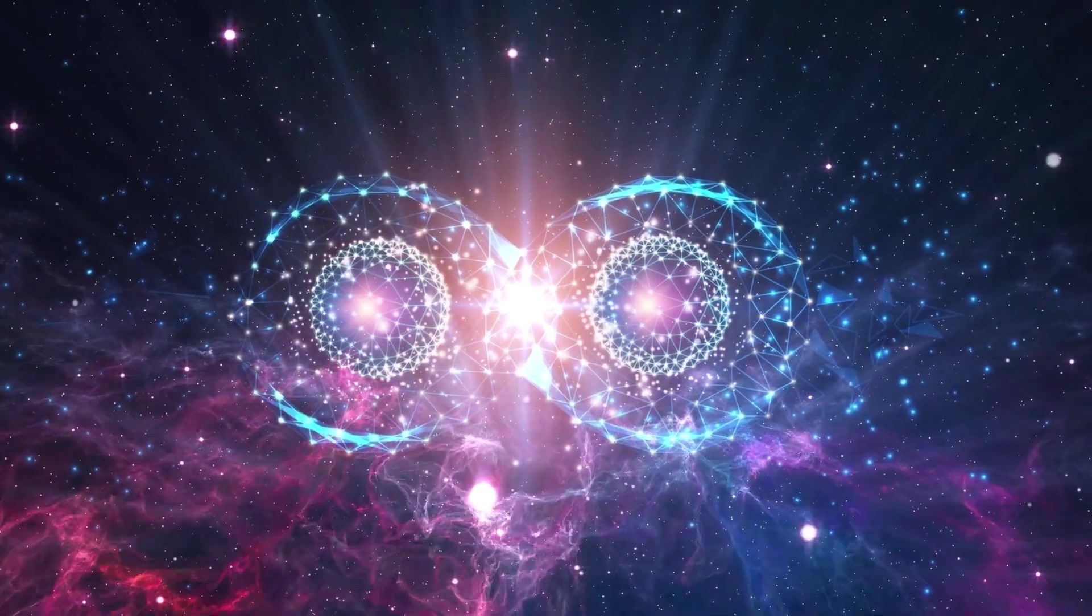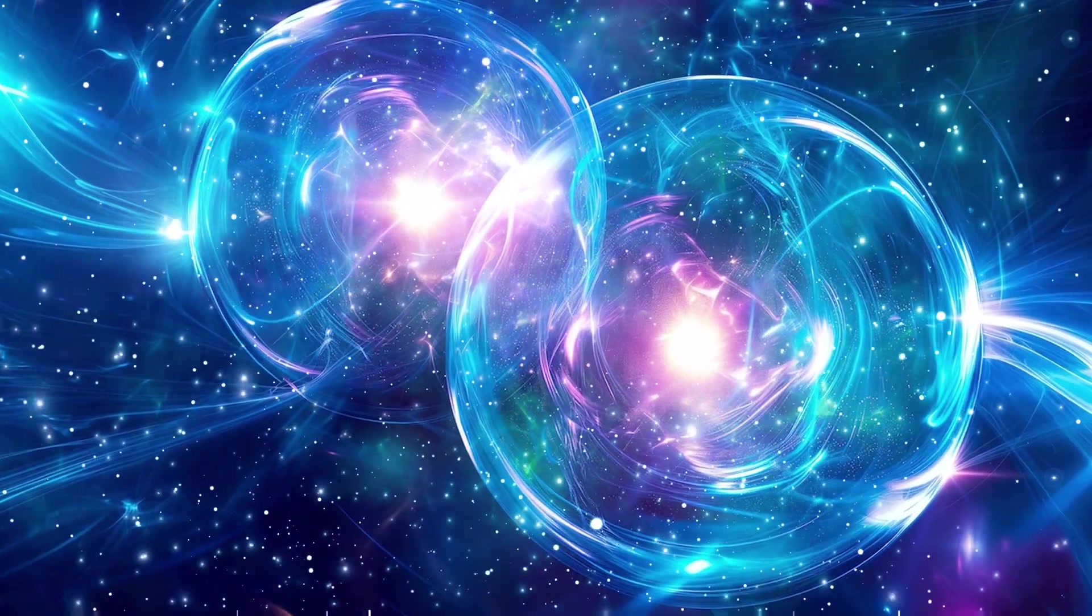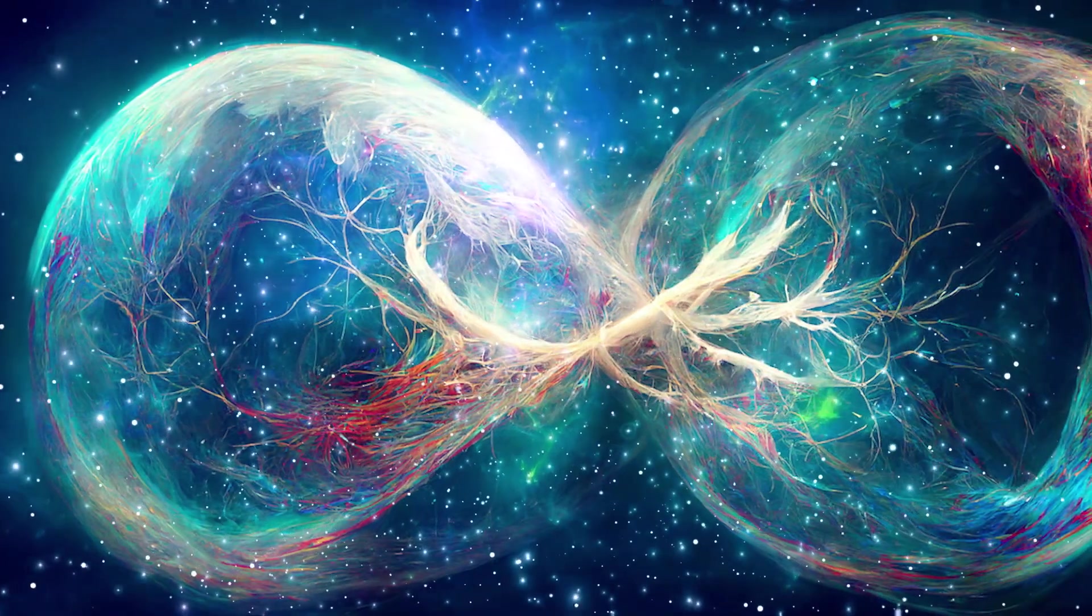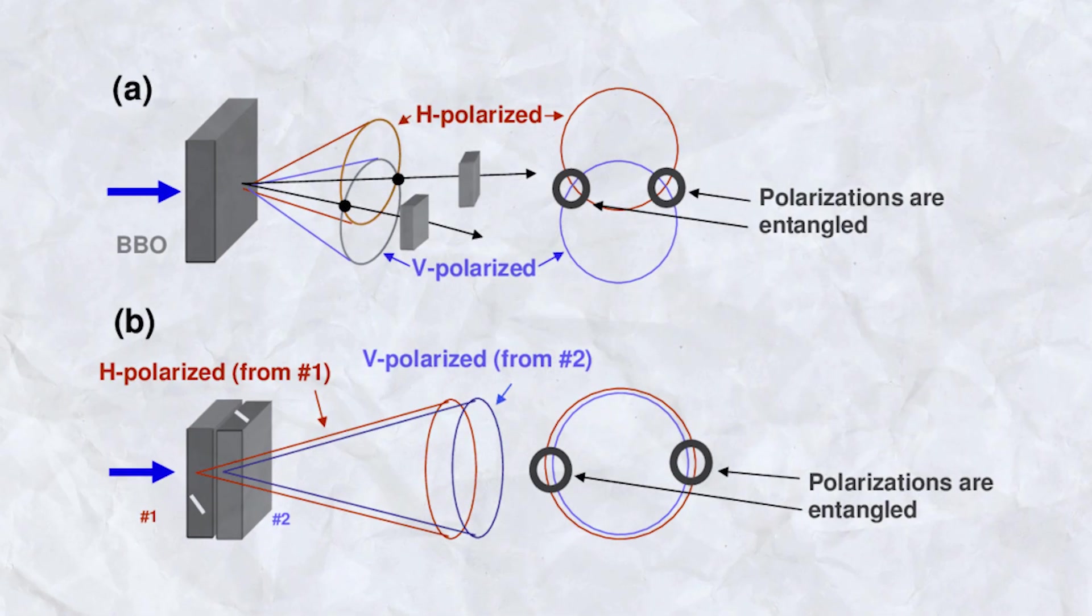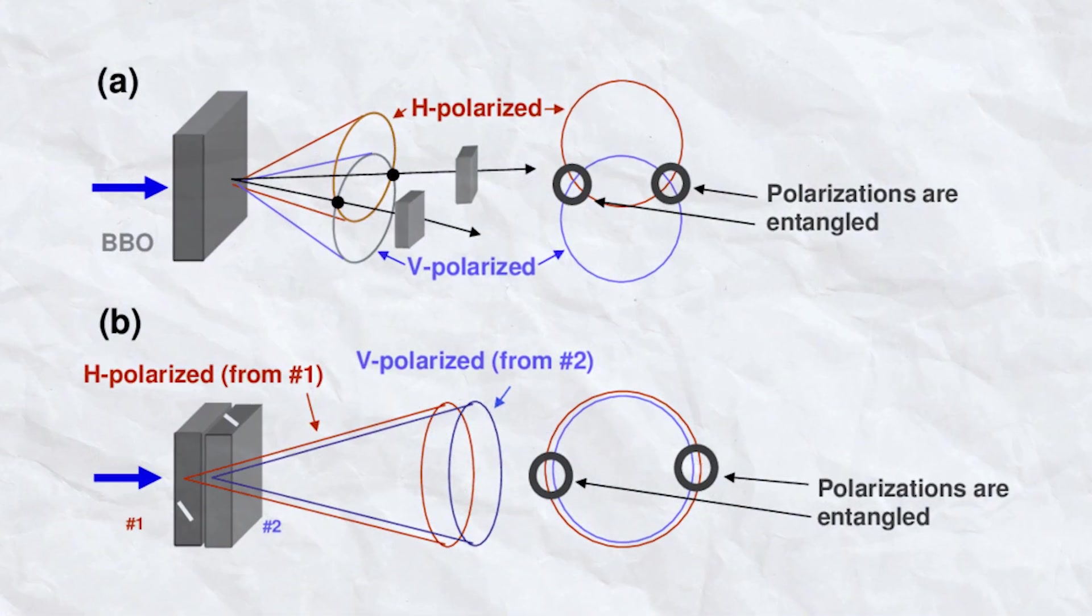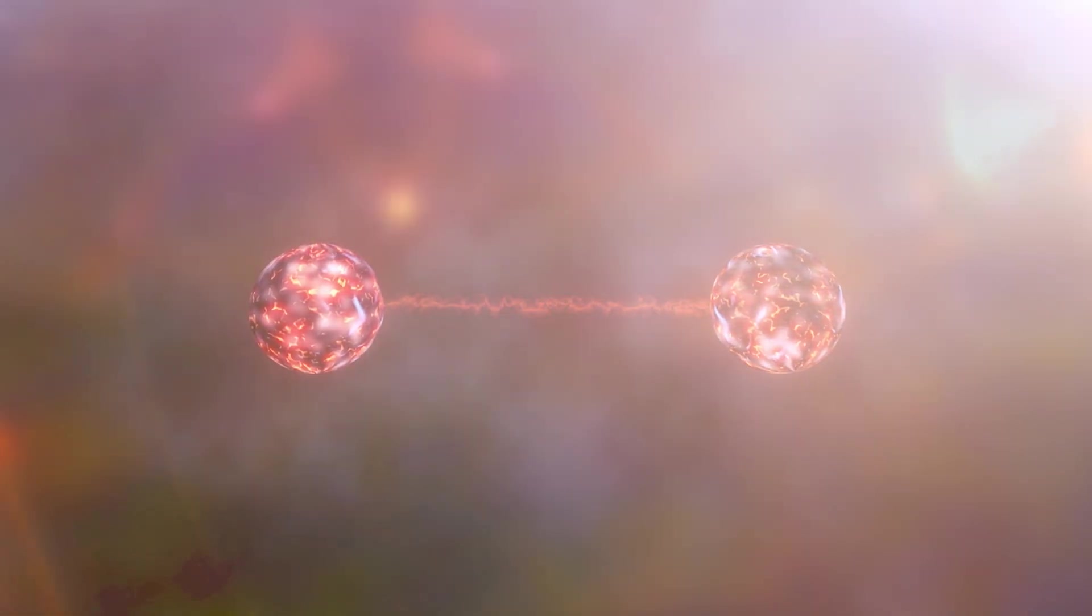Next, we have quantum entanglement, which seems to ignore the laws of space and time altogether. And if that's not baffling, I don't know what is. Imagine you have two particles that become connected to the point that the state of one particle instantly influences the state of the other, no matter how far apart they are. Sounds crazy, but this is a thing. When two particles are entangled, scientists can measure the polarization of one particle and find it to be, say, vertically polarized. And then instantly know that the other particle's polarization is the exact same, even if it's thousands of miles away.